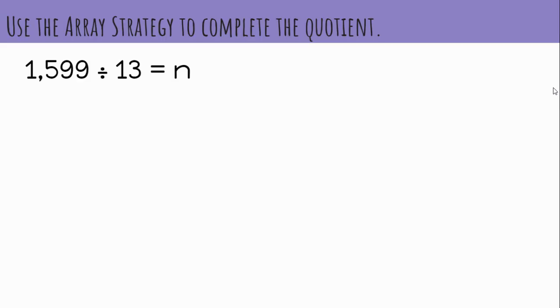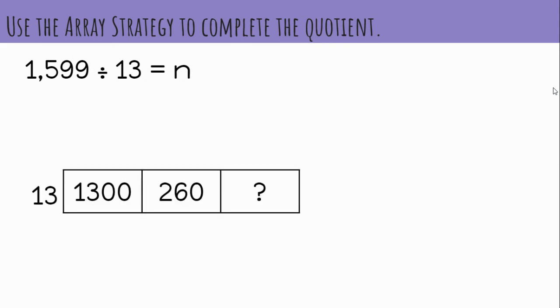1,599 divided by 13 equals n. Here are the friendly numbers I've already chosen. What is the missing friendly number that completes the array box? Pause the video and determine your answer. Did you get 39?